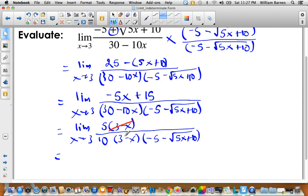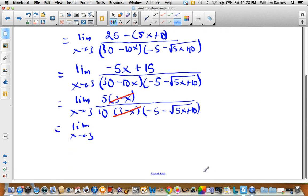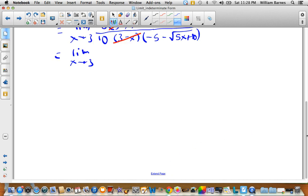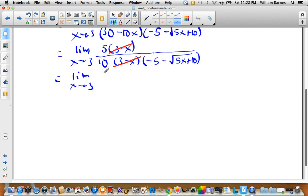So let's see. Cancel those two guys. So on the top, all I'm left with is a 5. On the bottom, I've got a 10. That 5 over 10 can reduce to 1 over 2. So I'll just leave it as limit as x approaches 3. So I end up with 1 over 2(-5 - √(5x+10)).